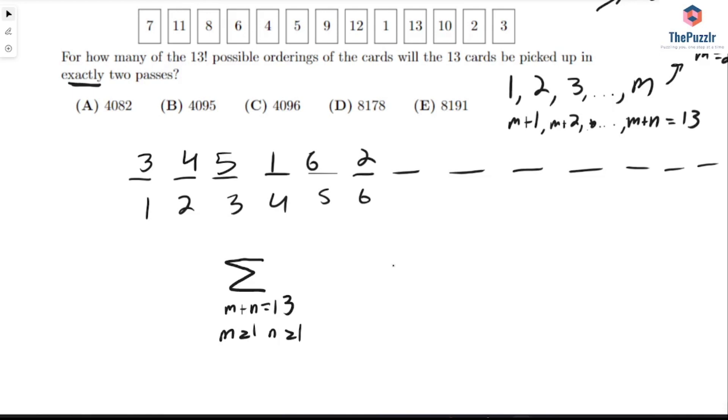N needs to be greater than or equal to 1 because there has to be exactly two passes. If it's 0 then there's only one pass. And then what you're going to do here is we're going to have M plus N and then we're choosing M of those spots. So cleaning this up a bit we get that K equals 1 and we iterate to 12 for 13 choose K. And then we subtract 1 from each case.